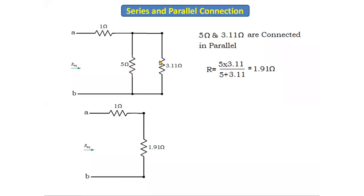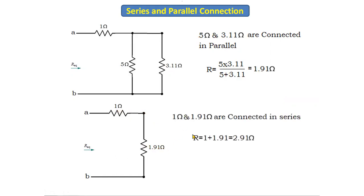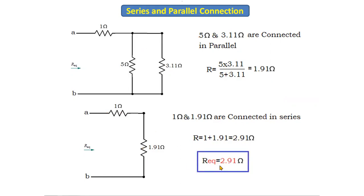We replace those two resistors with 1.91 ohms. Now the 1 ohm and 1.91 ohm are connected in series. Using the series formula R = R1 + R2, we get 1 + 1.91 = 2.91 ohms. So the total equivalent resistance of the given circuit is 2.91 ohms.